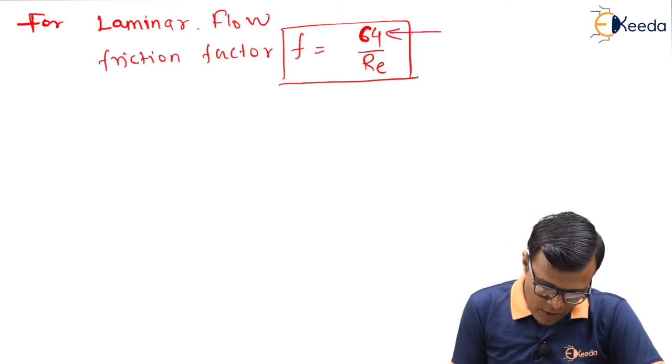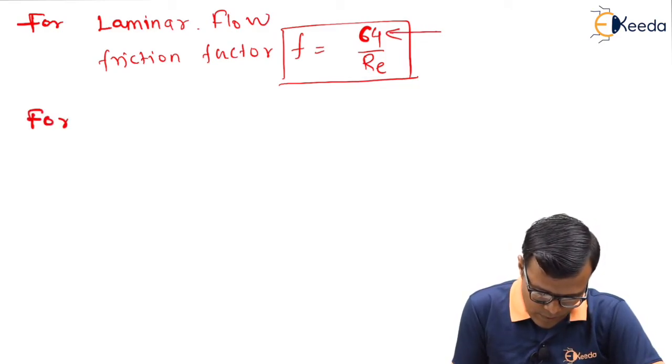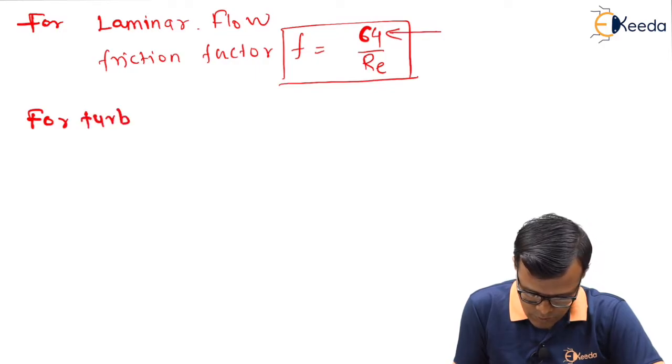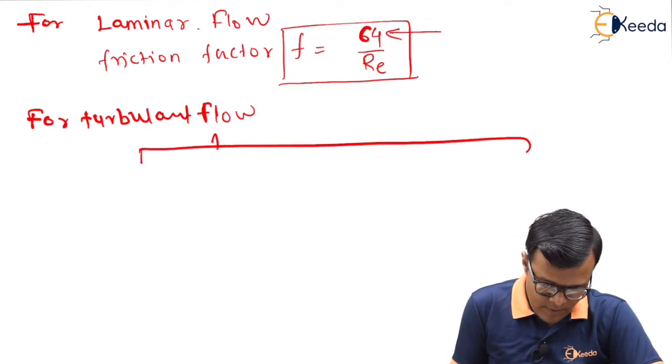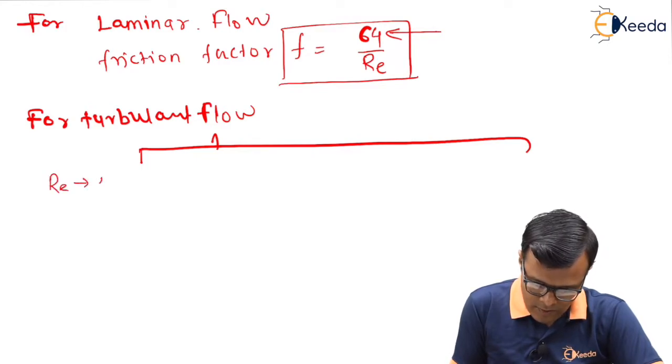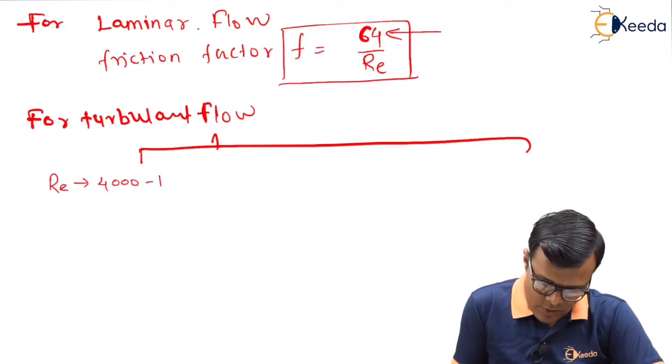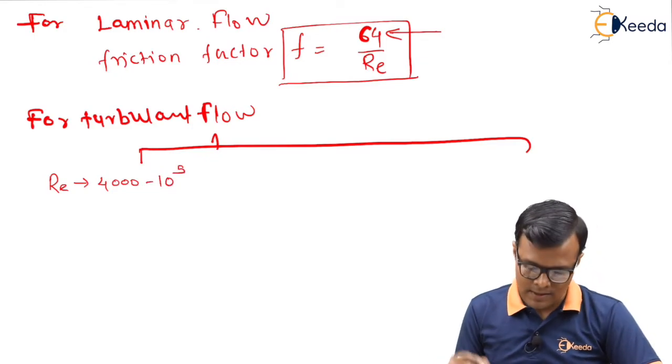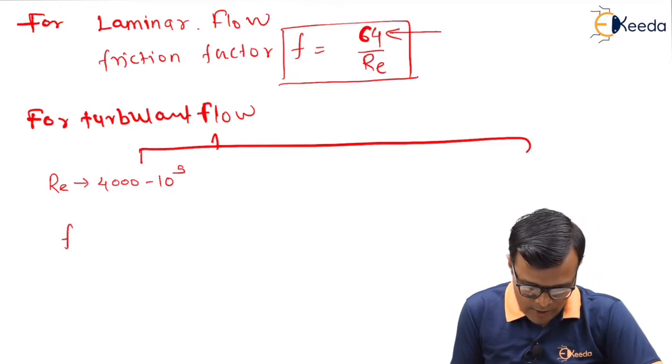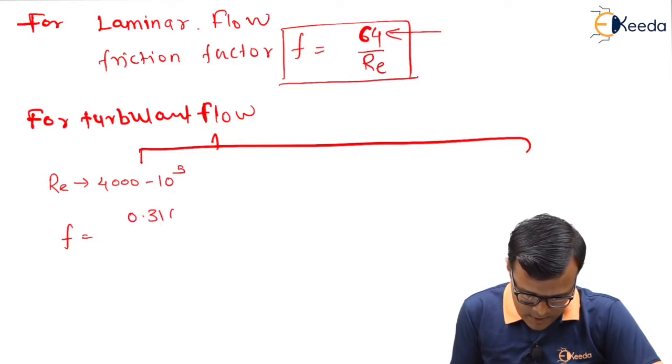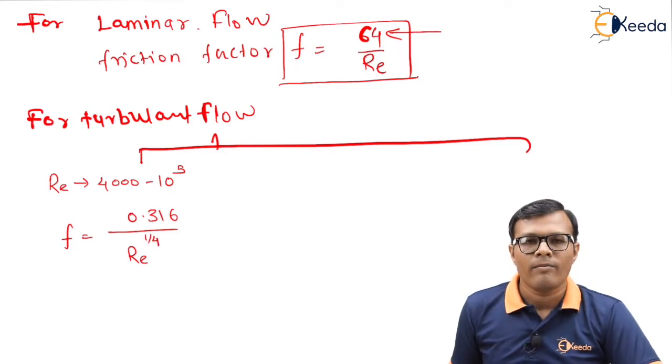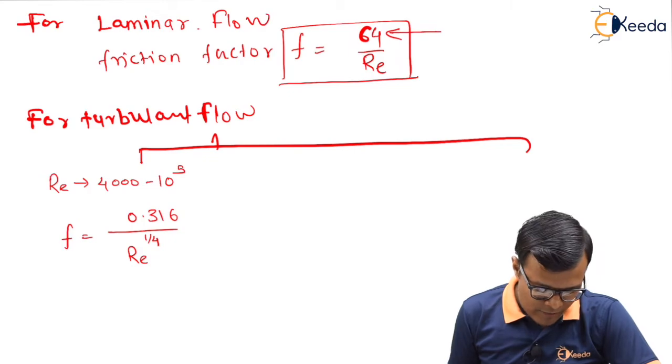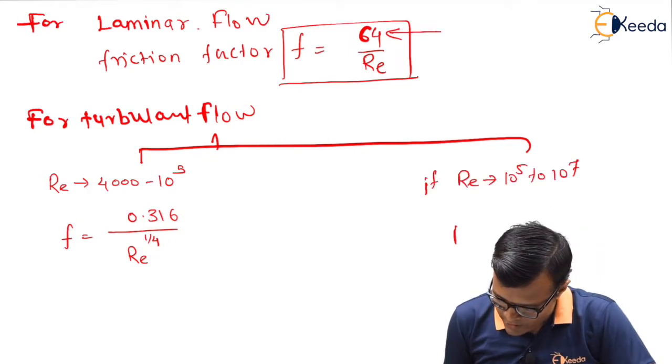For turbulent flow, there are two cases. First case is Reynolds number is 4000 to 10 to the power 5. Then in this case, this friction factor can be calculated as 0.316 upon Re to the power 1 by 4.